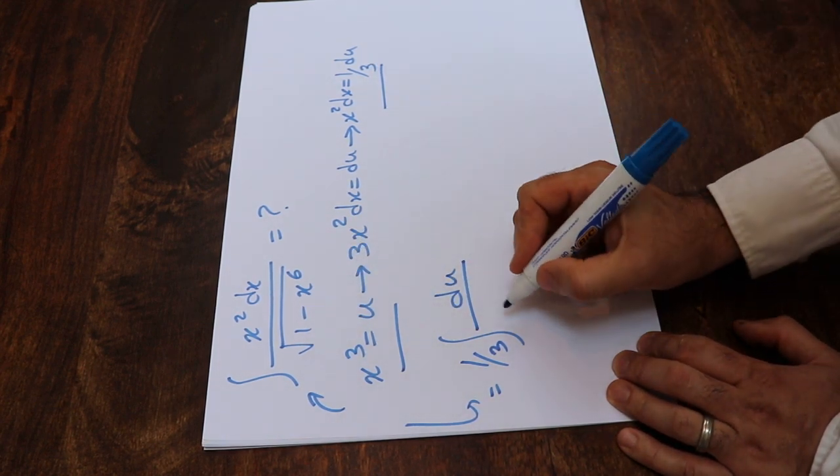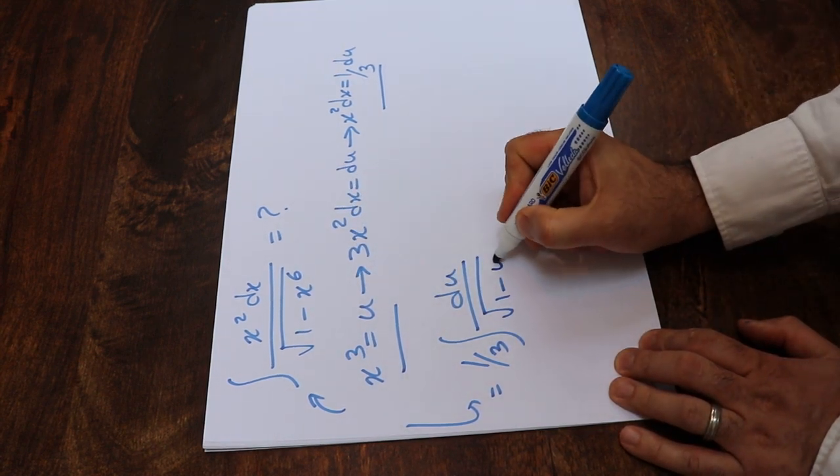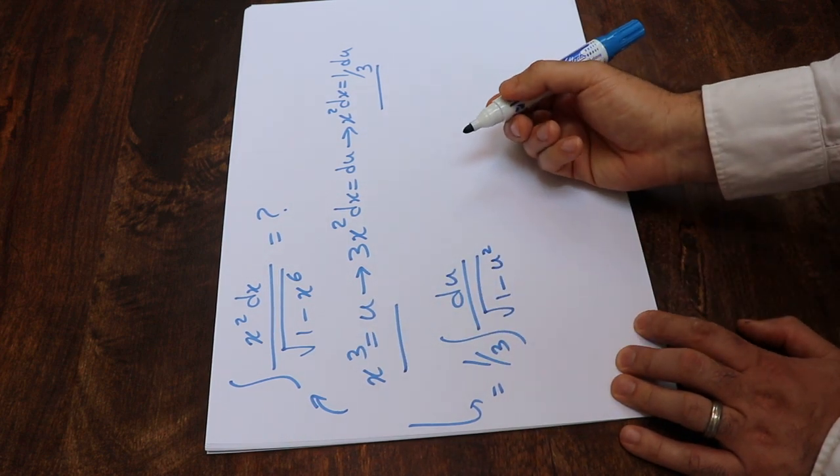Divided by the square root of 1 minus, instead of x⁶, I simply write u². Because x³ is u, therefore x⁶ will be u².